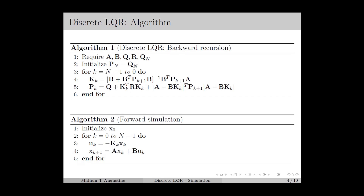Using the feedback gain at each time instant, we can compute the control input at the current instant. This can be implemented as a forward simulation, in which we start from the initial state x0, and then for each time instant k from 0 to N-1, we compute the control input using the feedback gain and the state vector at that instant. Then by using the control input and the current state vector, we compute the state vector for the next instant. We repeat this until the end of the time horizon, which gives the control input and the state vector at each time instant.